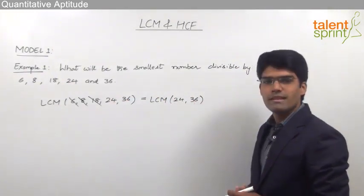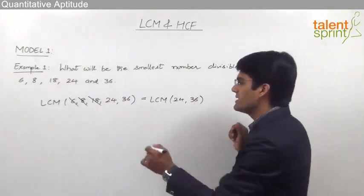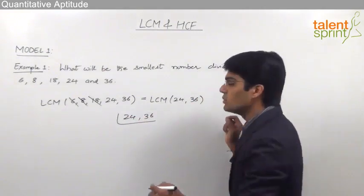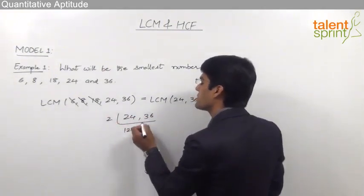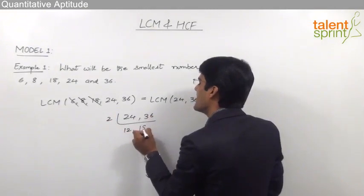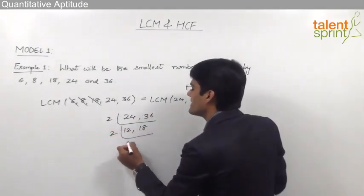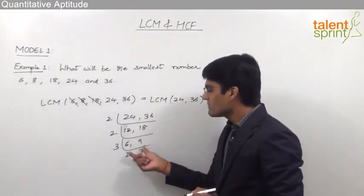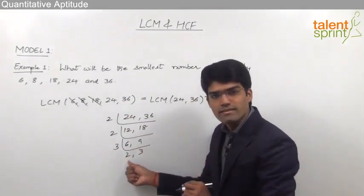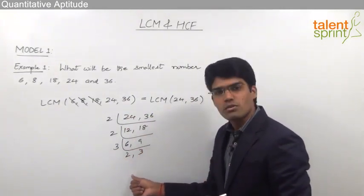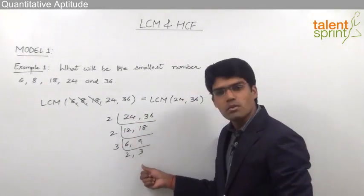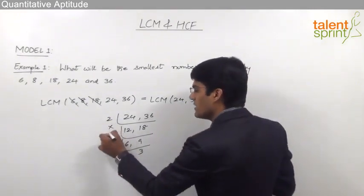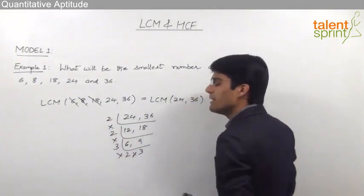So instead of finding the LCM of all 5 numbers, we can directly say the answer is LCM of 24 and 36, because all the remaining numbers are already factors of these two. Now let us calculate LCM of 24 and 36. Starting with 2: dividing gives 12 and 18. Dividing by 2 again gives 6 and 9. Then dividing by 3 gives 2 and 3. So the LCM is the product of all these divisors: 2 × 2 × 3 × 2 × 3.